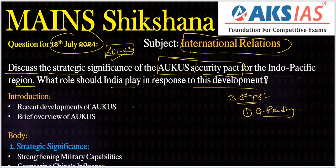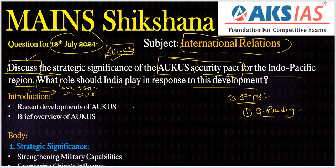Next, what are the important question tags here? First one is 'discuss' and second is 'what.' For 'discuss,' we need to write something regarding positives and negatives — positives means significance, negatives means some challenges we need to focus on. Next, we need to provide some solutions. That is the 'discuss' question tag.